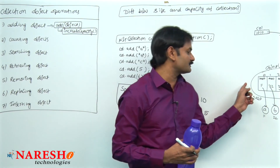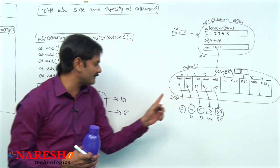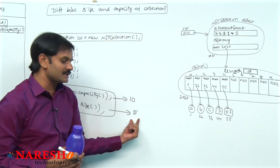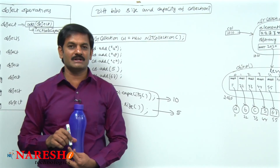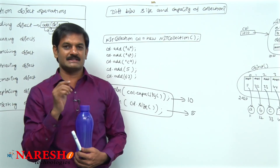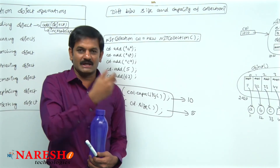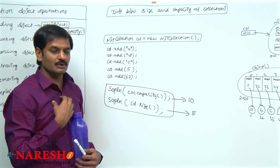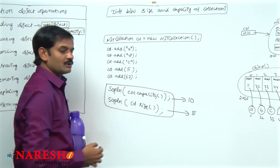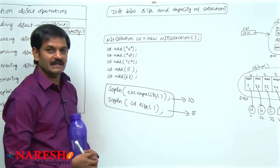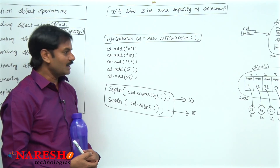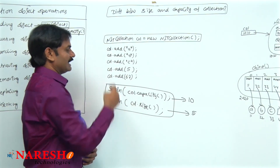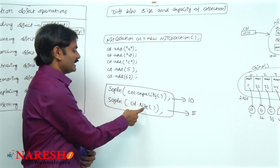The total capacity of this array object is 10, so the expected output from col.capacity() is 10. The total number of objects stored inside this collection is 5, so the expected output from col.size() is 5. If you compile this program you will get a compile-time error because the capacity and size methods are not yet defined in the NIT collection class. It is your responsibility to define the capacity and size methods.